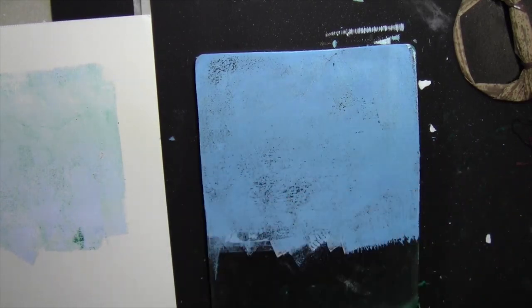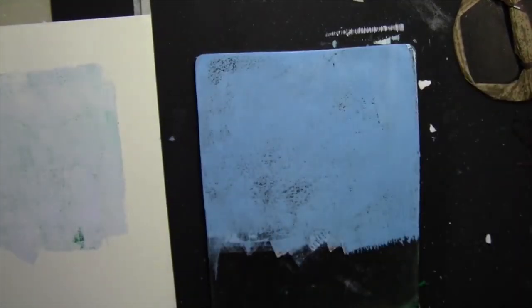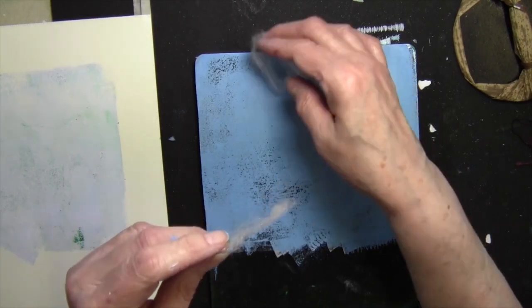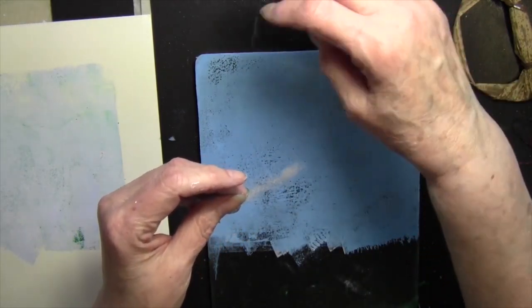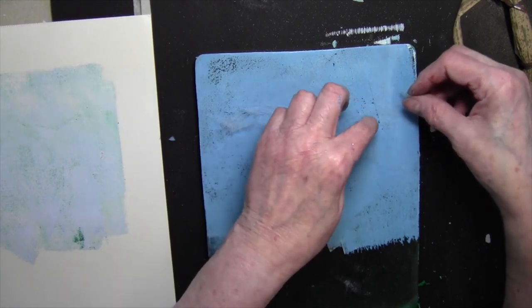So now I've got some of the spiderweb stuff like you buy at Halloween, and I'm going to use it to make some clouds in the sky. I pulled it apart and made it really wispy. So it was more cloud-like. So I'm ready to print.